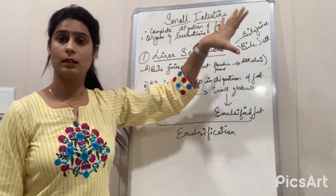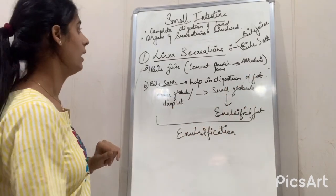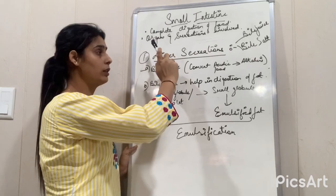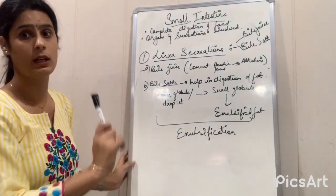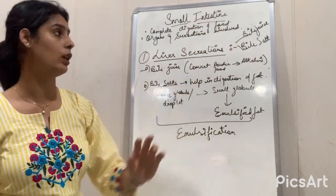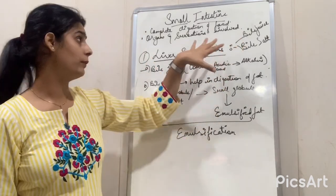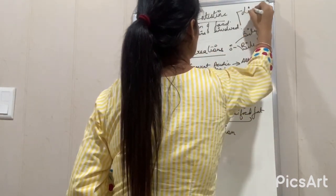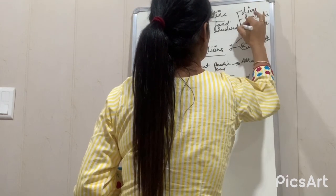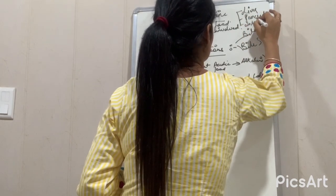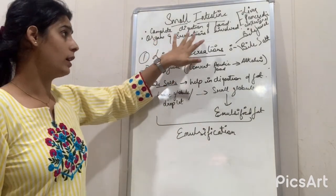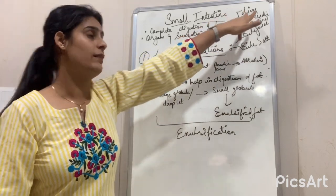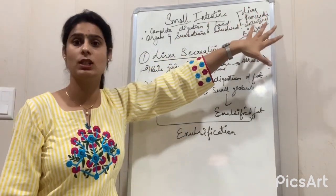Now, what happens in the small intestine? How does digestion occur in the small intestine? There is complete digestion of food in the small intestine and various organs and secretions are involved. There are three secretions involved: first is liver secretions, second is pancreatic, and third is intestinal. The three organs which play a role are liver, pancreas, and the intestine itself.